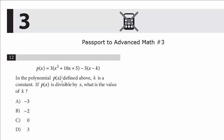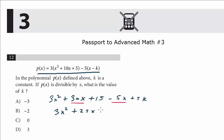For this problem, let's first take this polynomial and just multiply it out. That yields 3x² + 30x + 15 minus 5x + 5k. We can cancel out or reduce these two terms, and then we get 3x² + 25x + 15 + 5k.